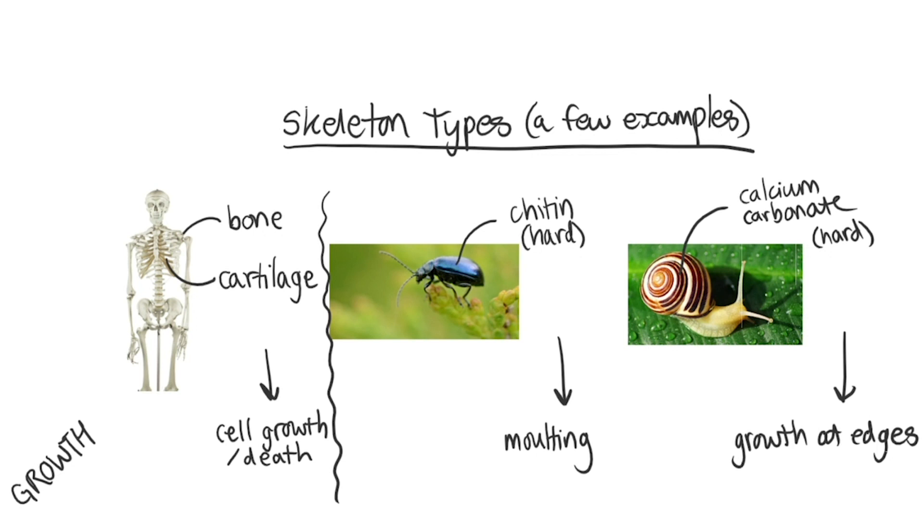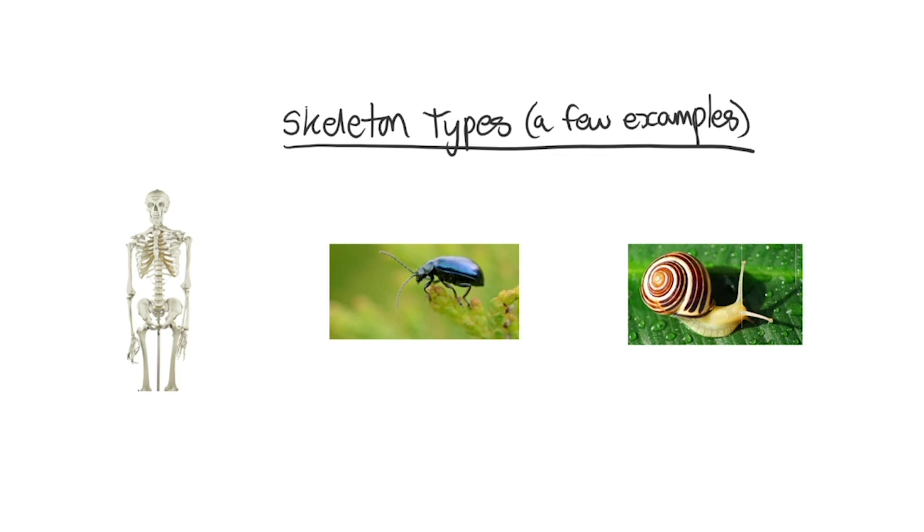Another animal that you probably have never thought of having a skeleton is an earthworm. There are no hard parts in the skeleton so internal pressure comes instead from water stored in special sections within the worm's body. The incompressibility of water means the sections can change shape but not volume, creating resistance for the muscles of the worm to push against.